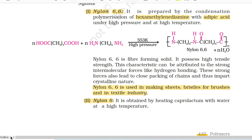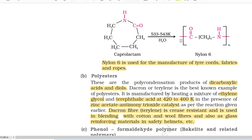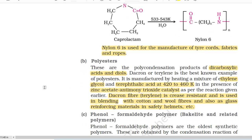Second, Nylon-6. It is obtained by heating caprolactam with water at high temperature (533 to 543 K) to give nylon-6. Nylon-6 is used for the manufacture of tyre cords, fabrics and ropes. B. Polyesters. These are the polycondensation products of dicarboxylic acids and diols. Dacron or Terylene is the best known example of polyesters. It is manufactured by heating a mixture of ethylene glycol and terephthalic acid at 420 to 460 K in the presence of zinc acetate-antimonyl trioxide catalyst. Dacron fibre (Terylene) is crease resistant and is used in blending with cotton and wool fibres and also as glass reinforcing materials in safety helmets etc.